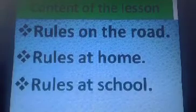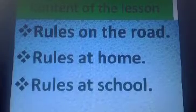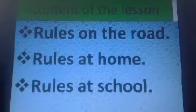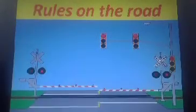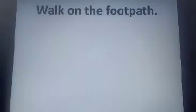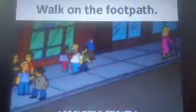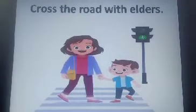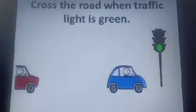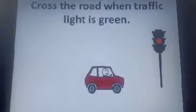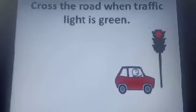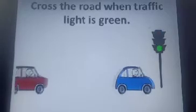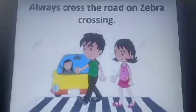In this lesson we are going to read about the rules to be followed on the road, at home, and at school. So let's start with the rules on the road. Always walk on the footpath. Cross the road with elders. Cross the road when the traffic light is green. Always cross the road on the zebra crossing.